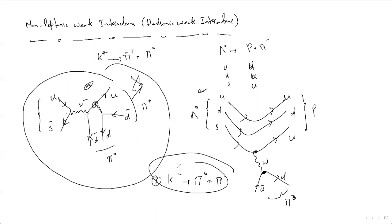To summarize: in the current-current interaction, the exchange of W-plus-minus boson couples to quarks and leptons, and we categorize weak interactions into three classes — leptonic, semi-leptonic, and non-leptonic. If W couples to leptons at both vertices, it is a leptonic decay. If W couples to leptons at one end and quarks at the other, it is semi-leptonic. If W couples to quarks or hadrons at both ends, it is a non-leptonic decay.